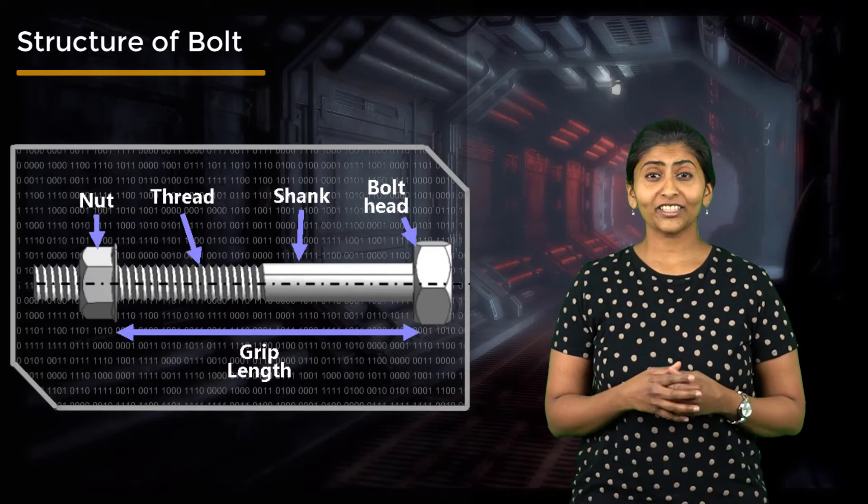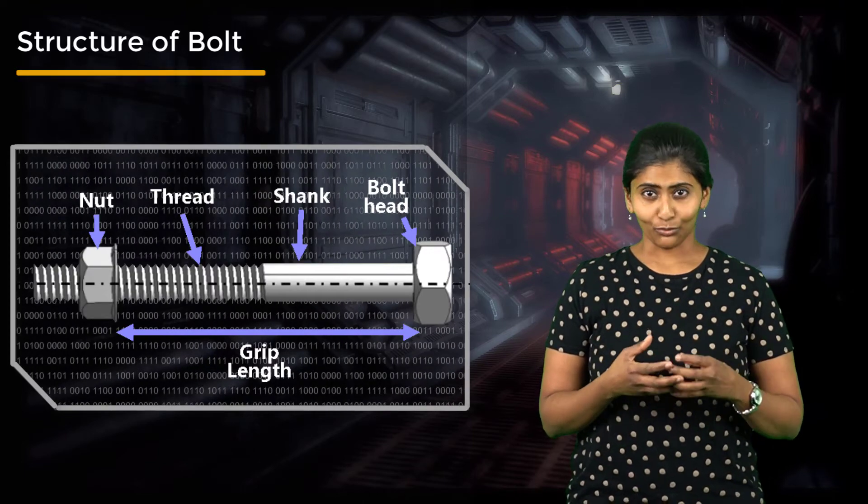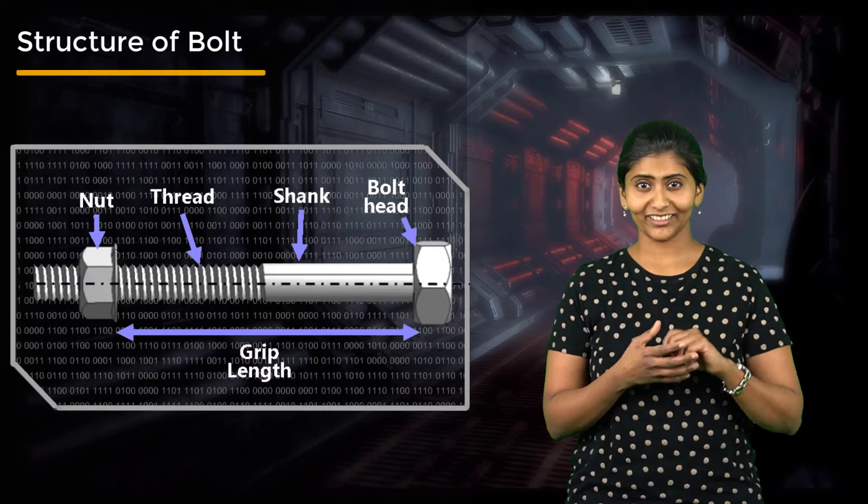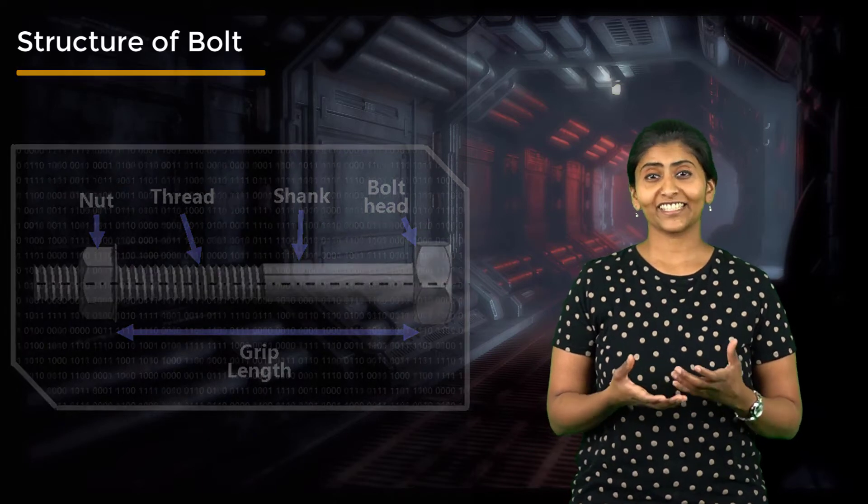The nut holds the assembly and prevents slippage. The portion of the bolt between the nut and the bolt head is the grip length. The threadless portion of the bolt is called the shank.